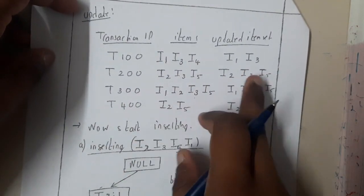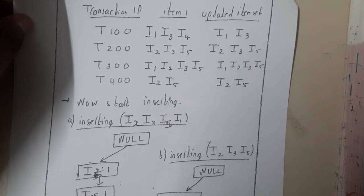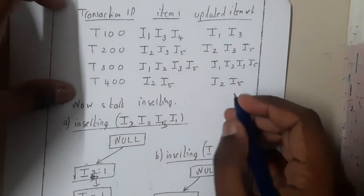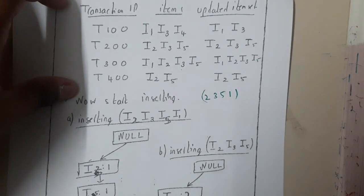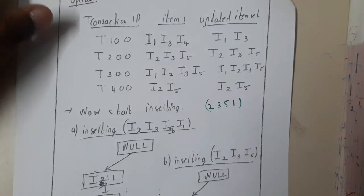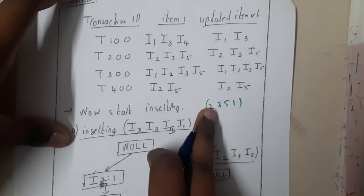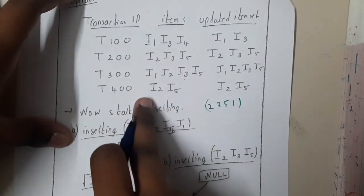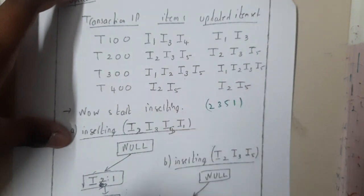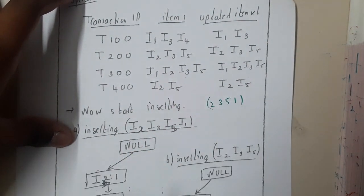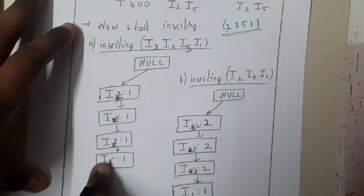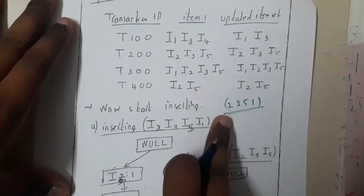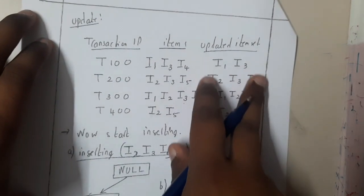Once we have that, as usual we update the list in order. I took the order as i2, i3, i5, and i1. The order you select should start with the item with maximum frequency. After some trial — I struck off multiple times — I settled on the order: i2, i3, i5, i1. Now write everything in that particular order, and then you can start inserting into the FP-tree.